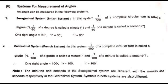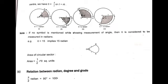The second system is the French system, also known as the centesimal system. In this system, one-400th part of a complete circular turn is called a grad. One-hundredth of a grad is called a minute, and one-hundredth of a minute is called a second. So: one right angle equals 100 grads, 1 grad equals 100 minutes, and 1 minute equals 100 seconds. It is important to note that the minutes and seconds in the sexagesimal system are different from those in the centesimal system, and the symbols used in both systems are also different.